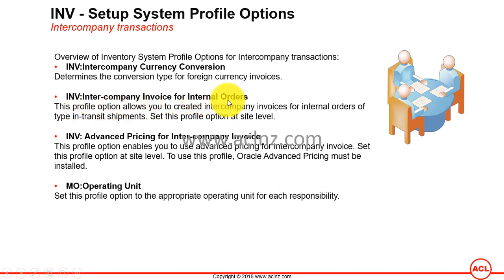The second profile option is INV Intercompany Invoice for Internal Orders. This profile option allows you to create intercompany invoices for internal orders of type in-transit shipments, and you set it at the site level. When you make internal orders between one operating unit and another, you define shipping networks, and within shipping networks you define in-transit shipments — how the shipment is going to go and whether it will stop in transit. The entire shipment network is defined in the inventory form.